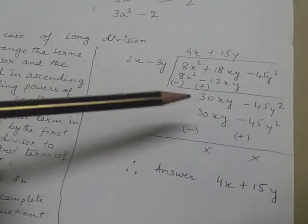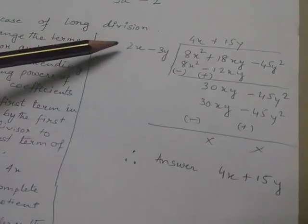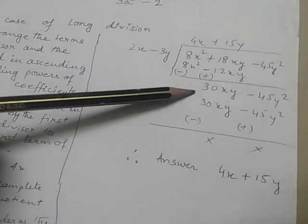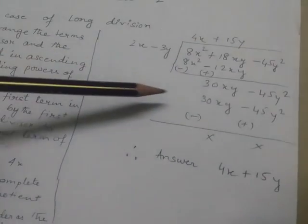Again, with this remainder—the first term is 30xy and the divisor's first term is 2x. 2x times what equals 30xy? 15y. So the next quotient term is +15y.